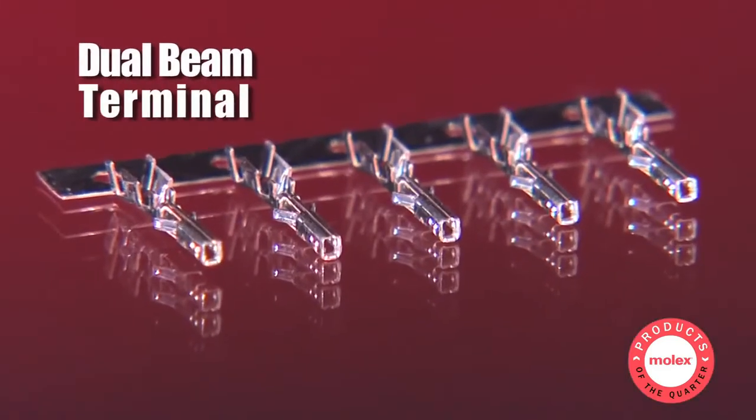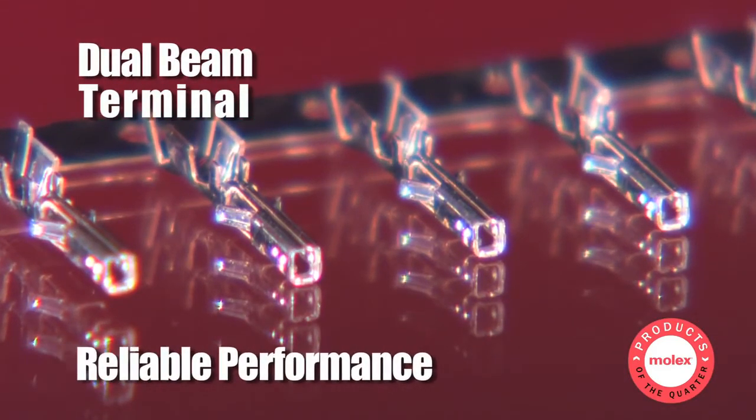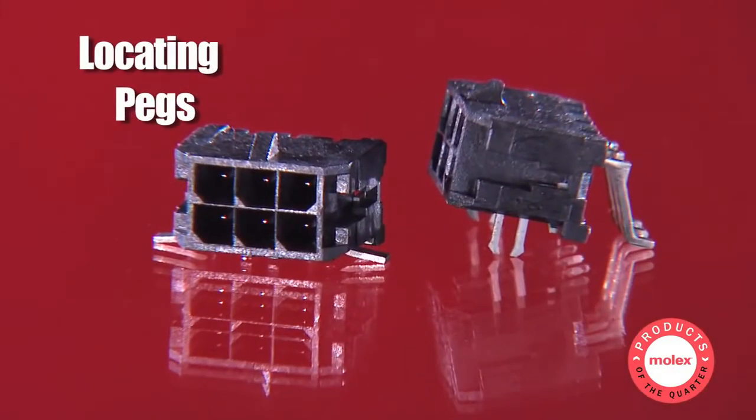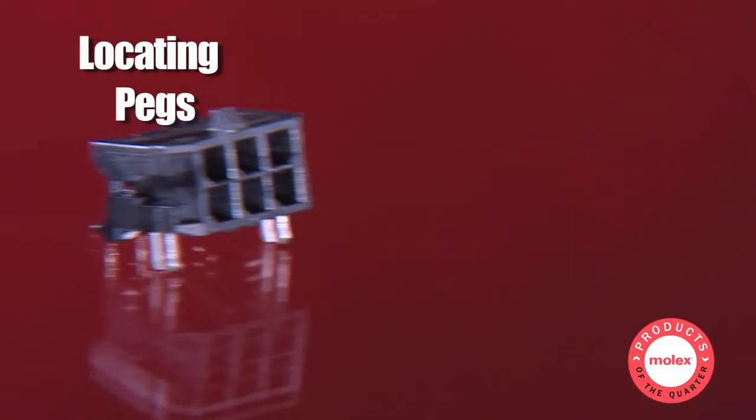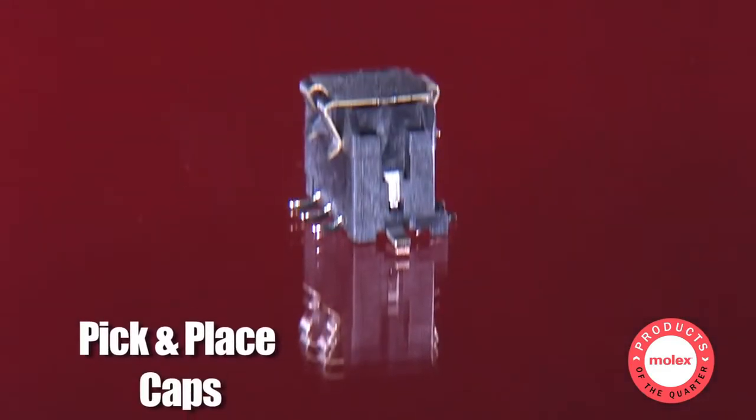Key benefits include a dual beam terminal, which assures reliable electrical contact and performance. Shrouded headers for protecting terminals during mating, along with locating pegs, which assure that headers are positioned in the proper orientation, eliminating quality issues, as well as pick and place caps for automated assembly.